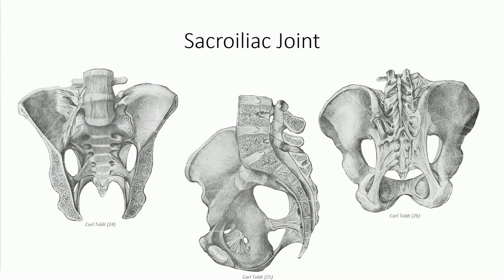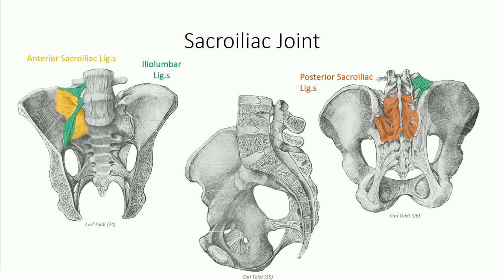We want to minimize movement at the sacroiliac joint as much as possible, so the sacroiliac joint is greatly reinforced through a series of both intrinsic and extrinsic ligamentous attachments. Between the posterior tuberosities are deep interosseous ligaments that directly bind both surfaces. These are continuous with the posterior sacroiliac ligaments that provide additional reinforcement. Similarly, the anterior synovial joint is reinforced by thickenings of the synovial joint capsule — the anterior sacroiliac and iliolumbar ligaments.